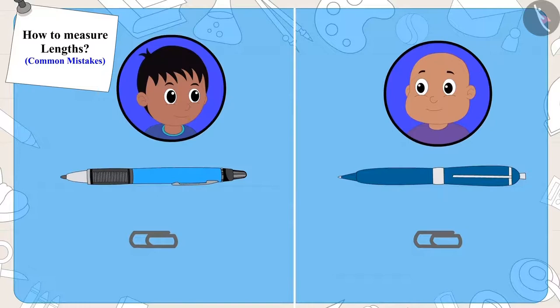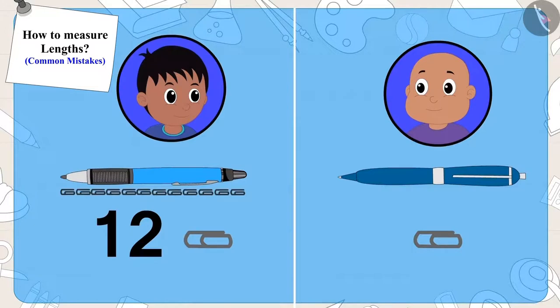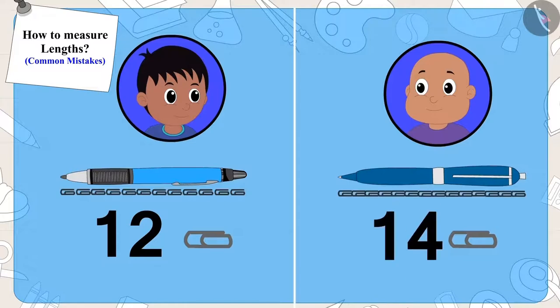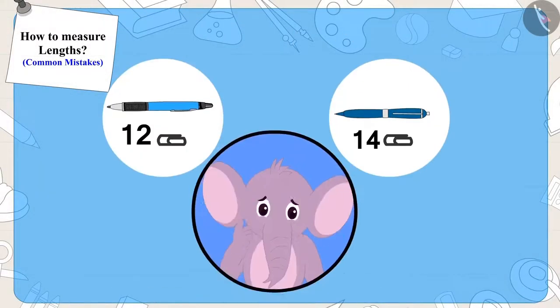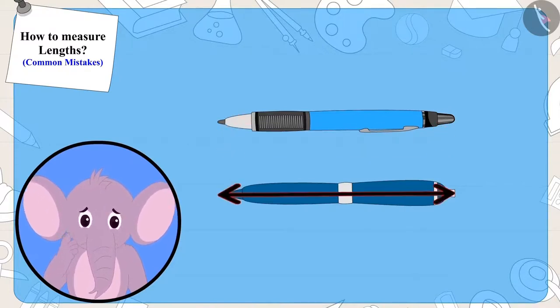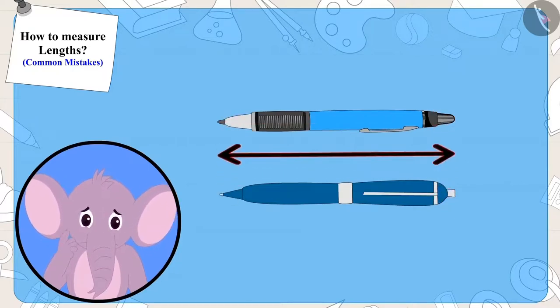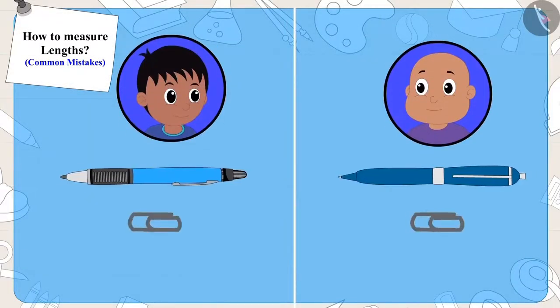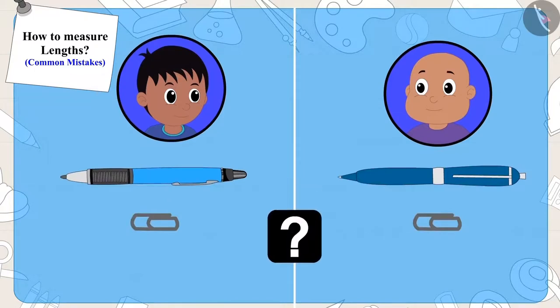Raju said his pen was 12 clips long and Bablu said his pen was 14 clips long. Appu again felt something was wrong here. He placed both their pens alongside each other and saw that both pens were of the same length. Can you say this time out of the two who made the mistake and what was the mistake?